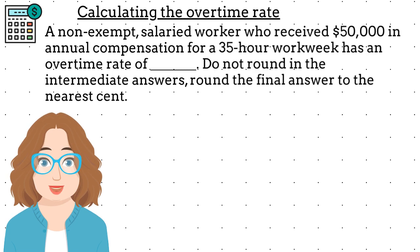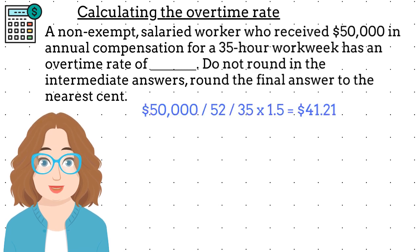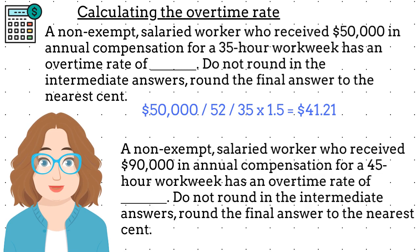Let's do this calculation together. We take the $50,000 and divide it first by 52, which is the number of weeks in the year. Then we divide the result by 35, because 35 is the number of hours in the workweek. That result is the hourly rate. However, we want the overtime rate, which means we need to multiply the hourly rate by 1.5. The result is $41.21.